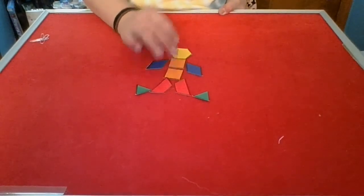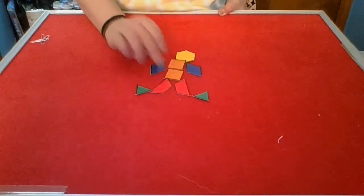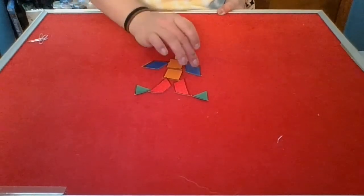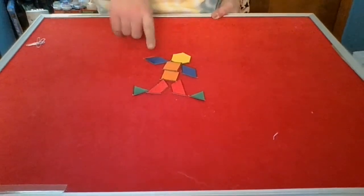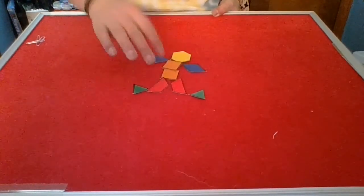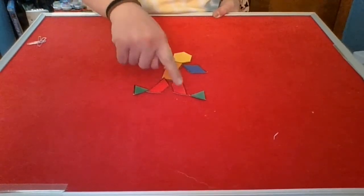And then I have one, two squares, one, two diamonds, and those are the arms and the body.